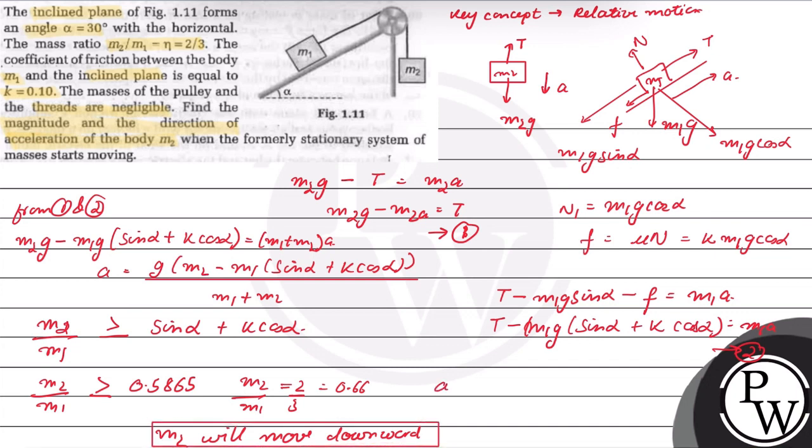Now the acceleration of M2 will be equal to g times (M2 minus M1 times (sin alpha plus k cos alpha)) upon (M1 plus M2), that is equation 3. Now putting values in equation 3, we will get A is equal to g upon bracket 2 by 3 minus 1.173 upon 2. So the net value of A is equal to 0.05g, A is equal to 0.05g.